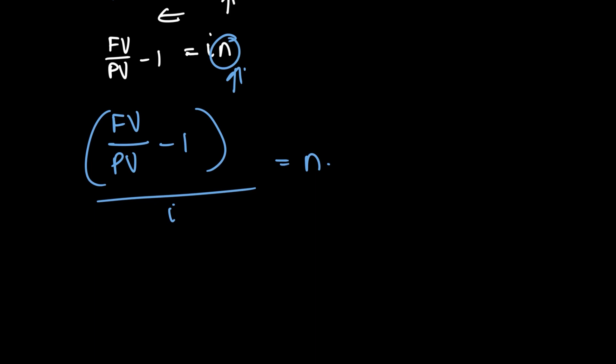Let's just make it super clear. Here we have n is equal to future value divided by present value minus 1, all divided by i. So when we're looking for n, we will use the formula in this manner.